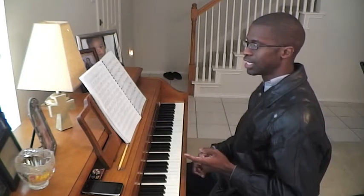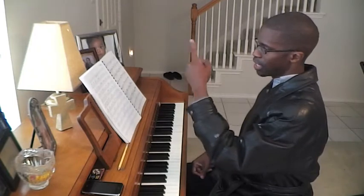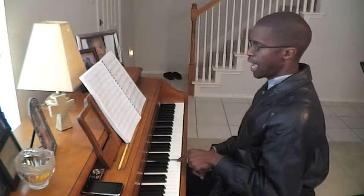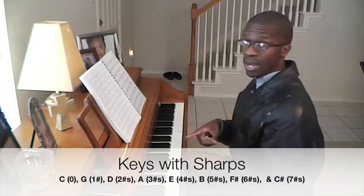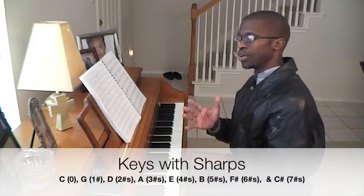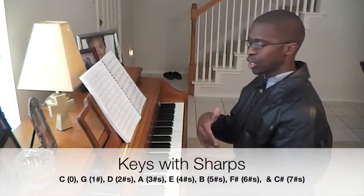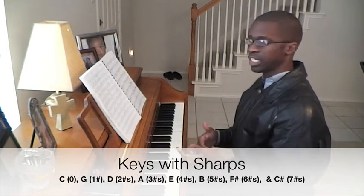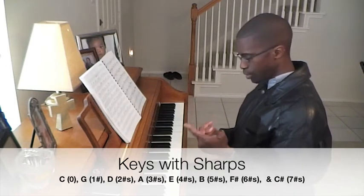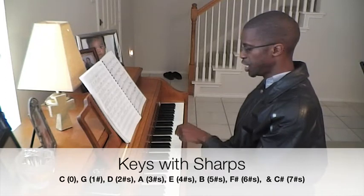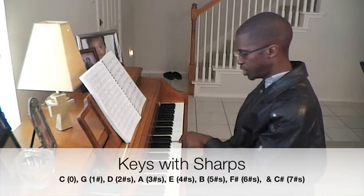Imagine in your mind a clock and a circle starting with the key of C. When you go around clockwise, you're going up a fifth from the last key. The key of C has no sharps or flats, so it would just be C, D, E, F, G, A, B, C.